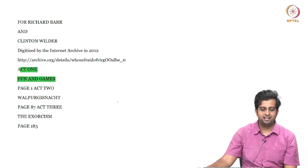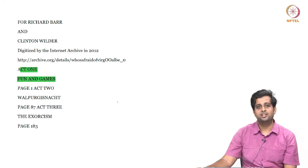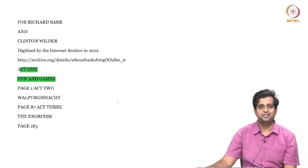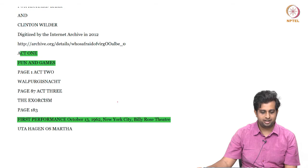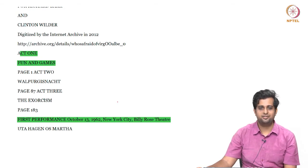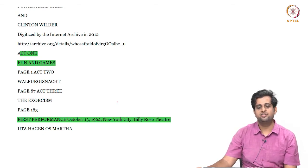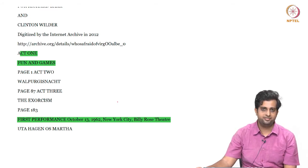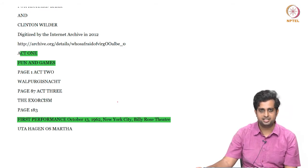Hello and welcome to this lecture, part of the 20th century American drama course. Today we are looking at Edward Albee's 1962 play, Who's Afraid of Virginia Woolf. This is one of the early plays of Albee. He had some minor success before this with his play Zoo Story, which was performed in 1959, and Who's Afraid of Virginia Woolf was first performed in 1962.